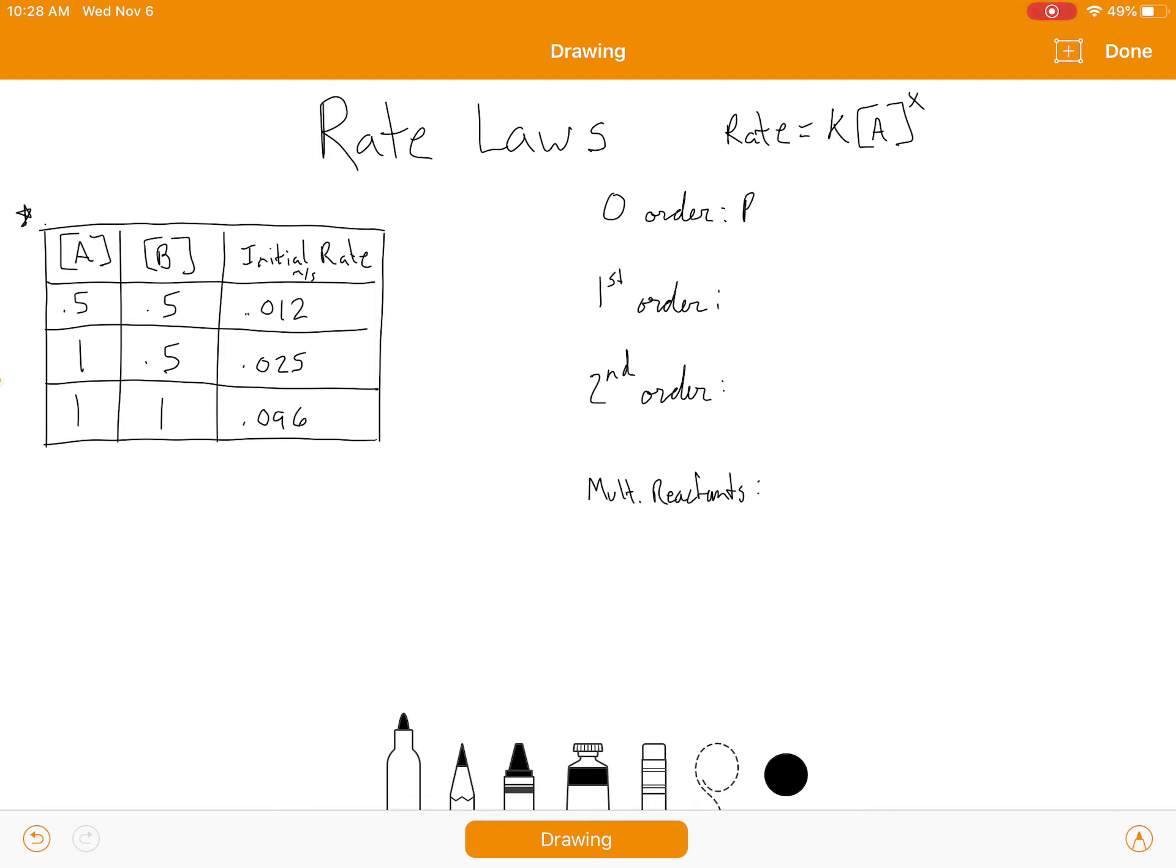So for a zero-order reaction, you would be looking at rate is equal to k times A raised to the zero power. First order, you would have k equals A raised to the first power. And sometimes they leave the one, sometimes they actually just erase it because something raised to the first power is just the thing, whatever it was before. Second order reaction, the rate is equal to k times the concentration squared.